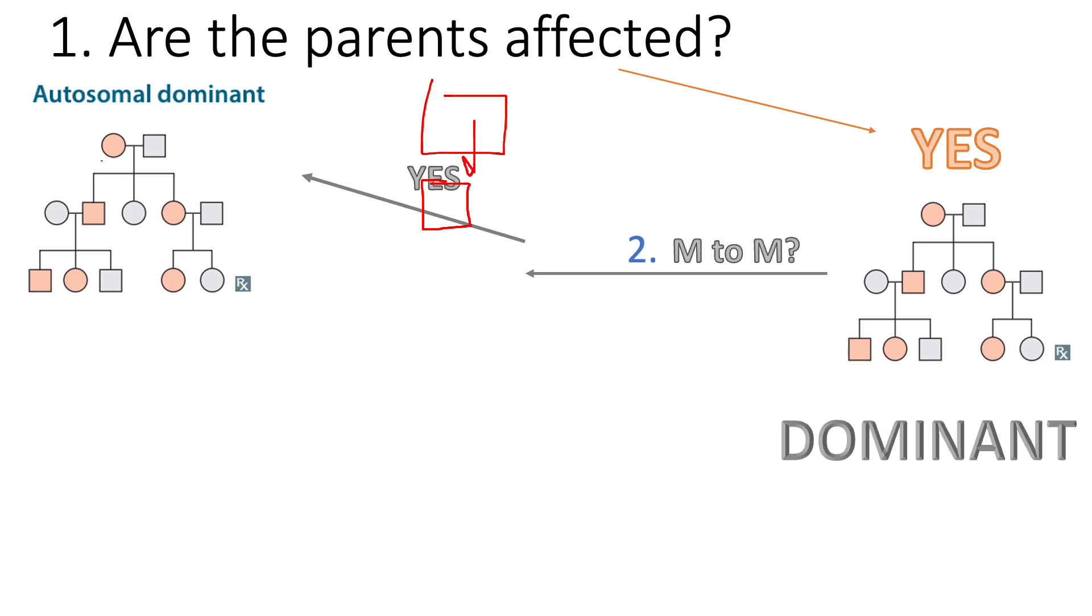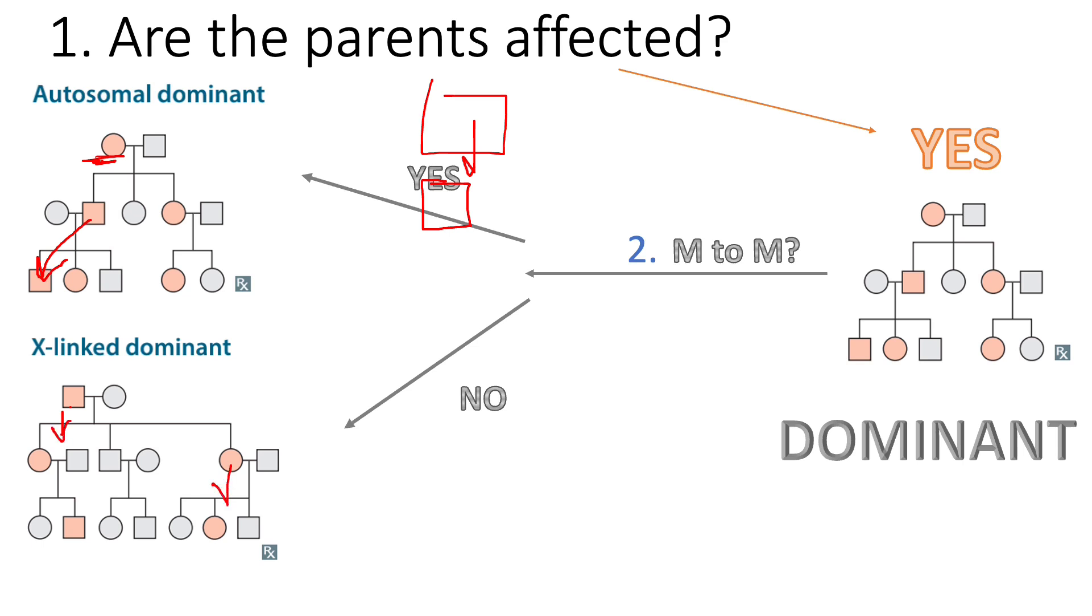In this example, for instance, a square gave a square, so there is male to male transmission, so then it must be autosomal. We already know it's dominant because one parent is affected. Now if there is no male to male transmission, you can see here that no square was able to give any other squares. The squares gave circles only. No male to male transmission, then it's X-linked.